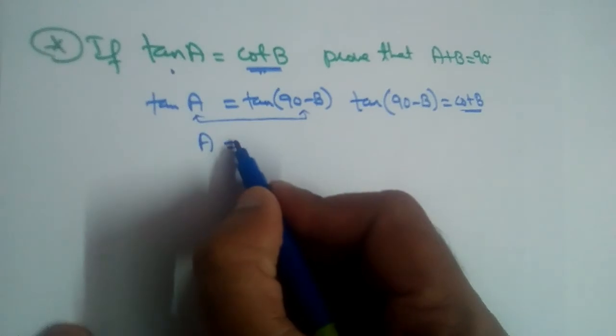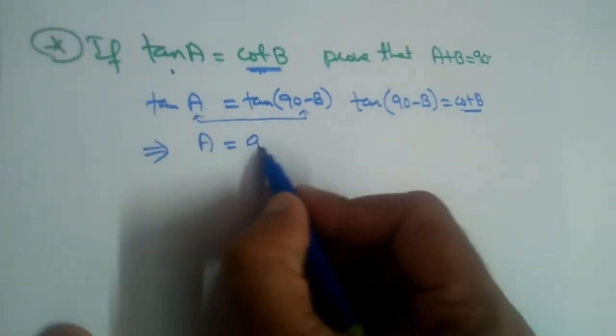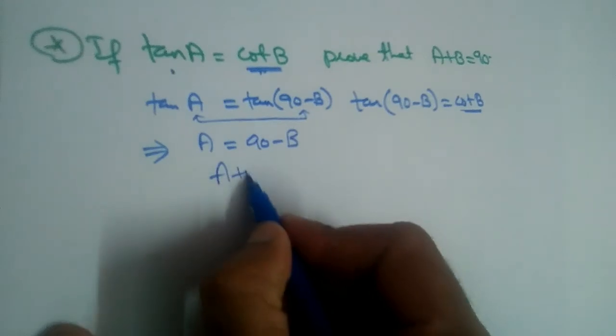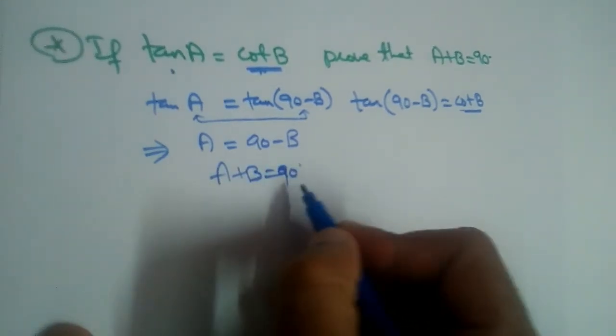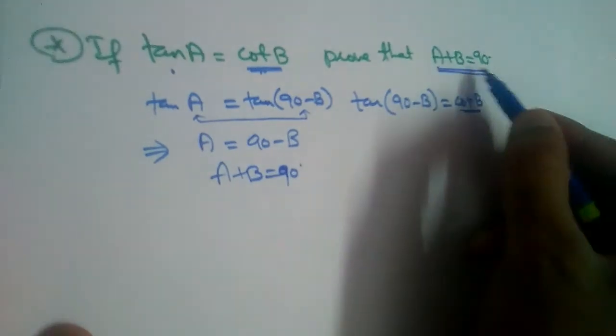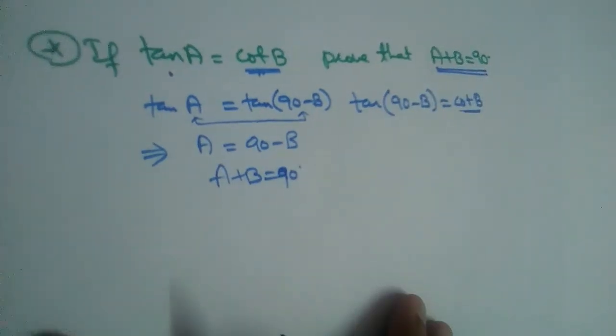So A is equal to 90 minus B. Send B to the other side: A plus B is equal to 90 degrees. We proved this. We changed cot in this. We can also change tan, let us see that.